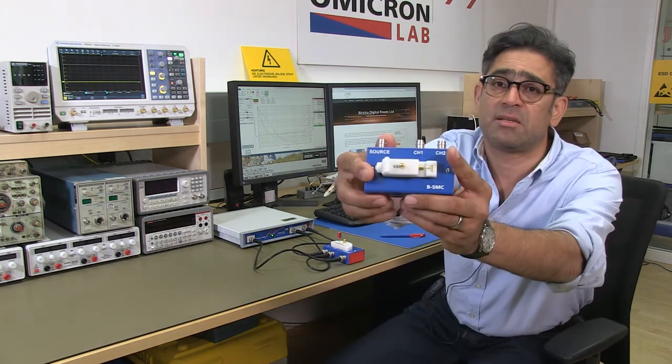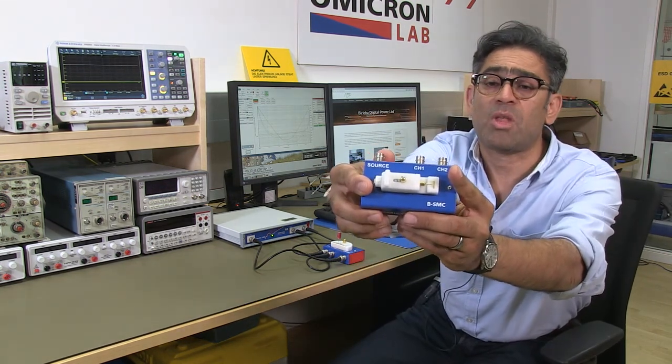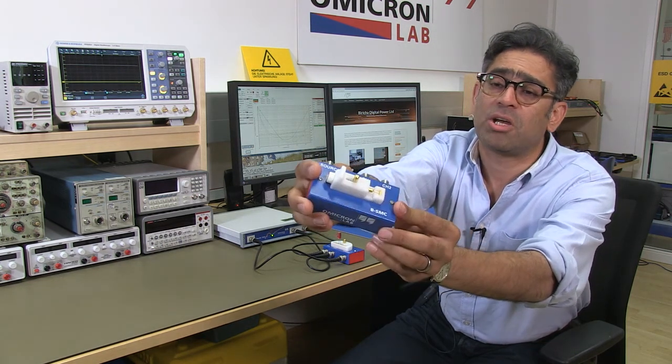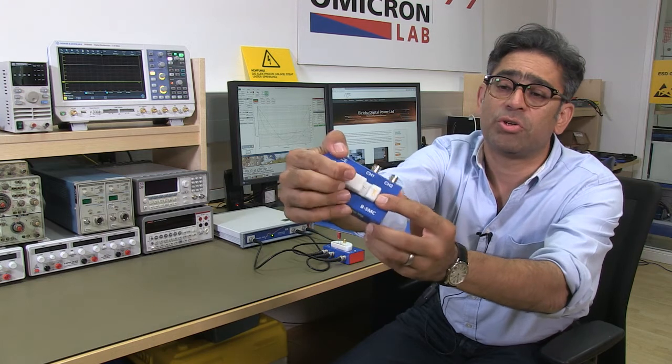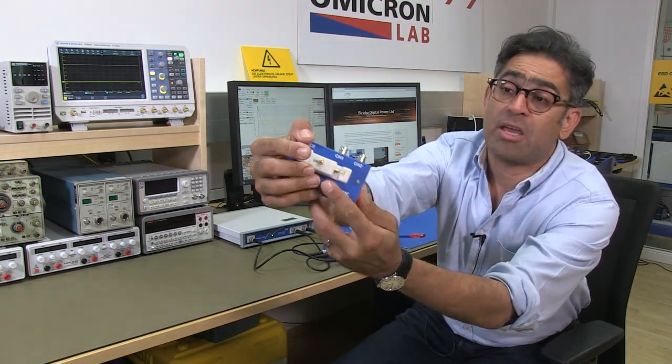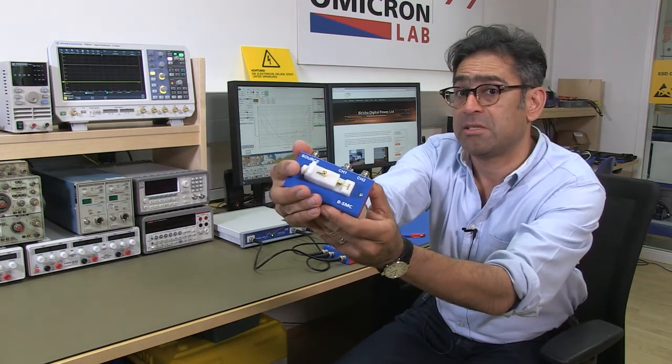This becomes particularly important when you deal with surface mount components. And that's why there is a second impedance adapter which Omicron has designed so that you could actually put your surface mount component in here and then make a correct measurement without the impact of the component leads.